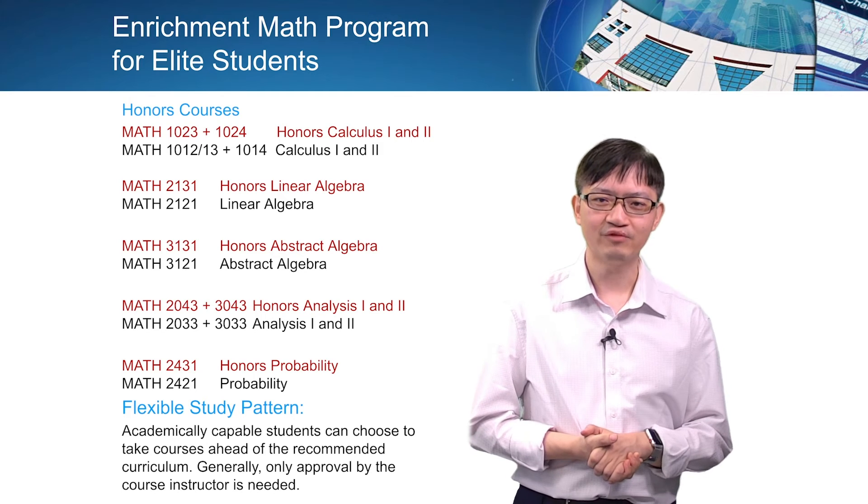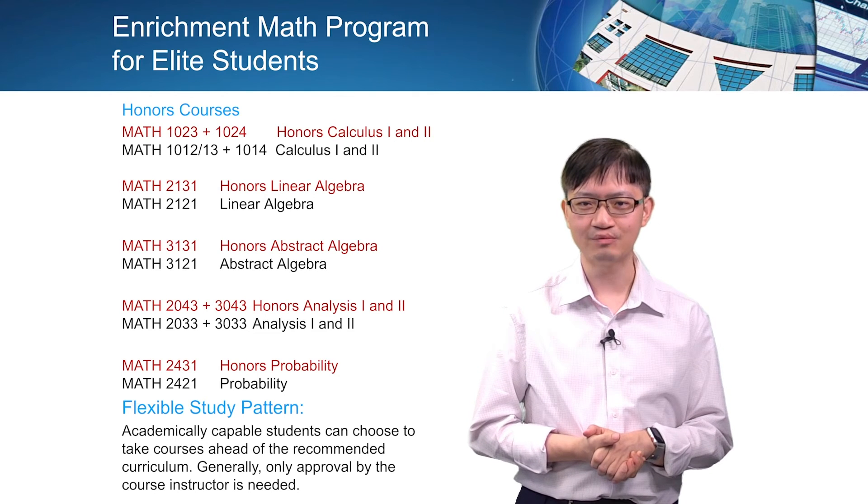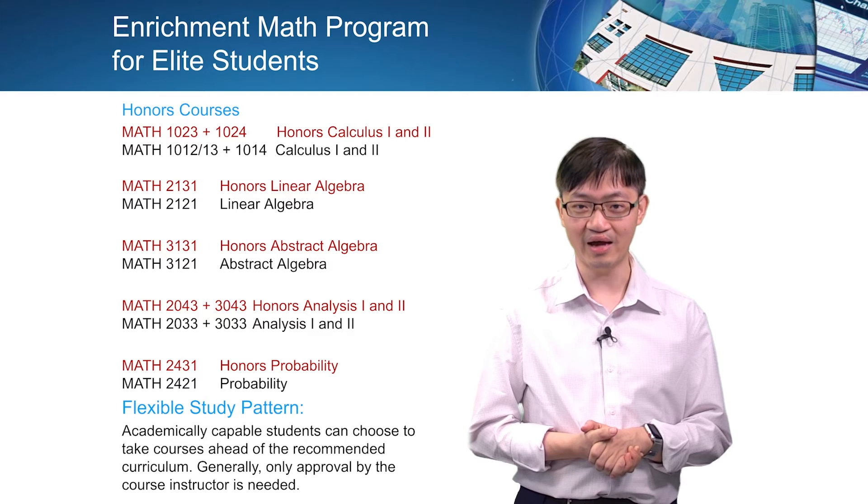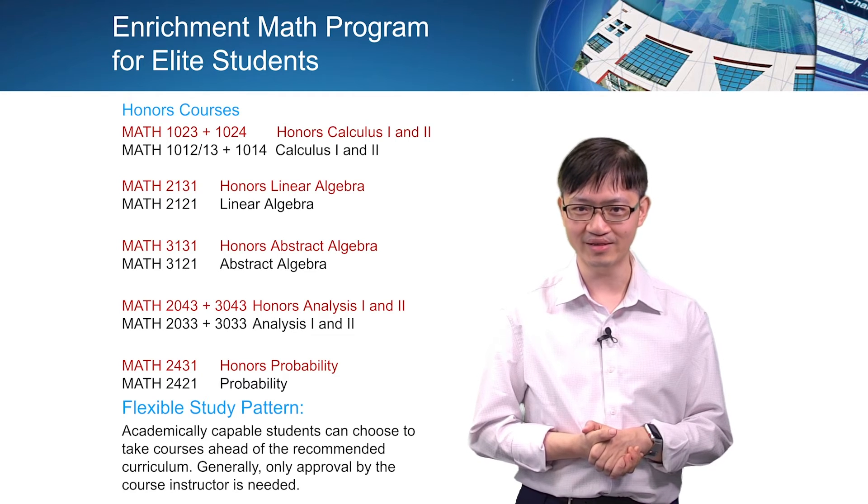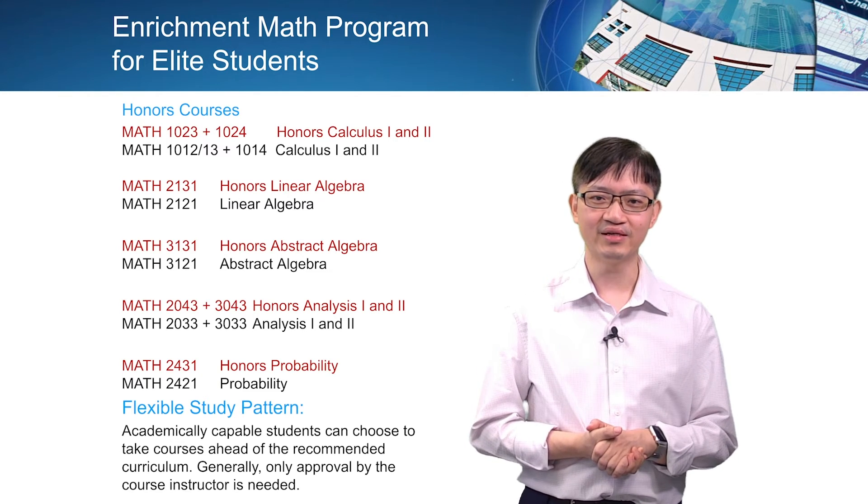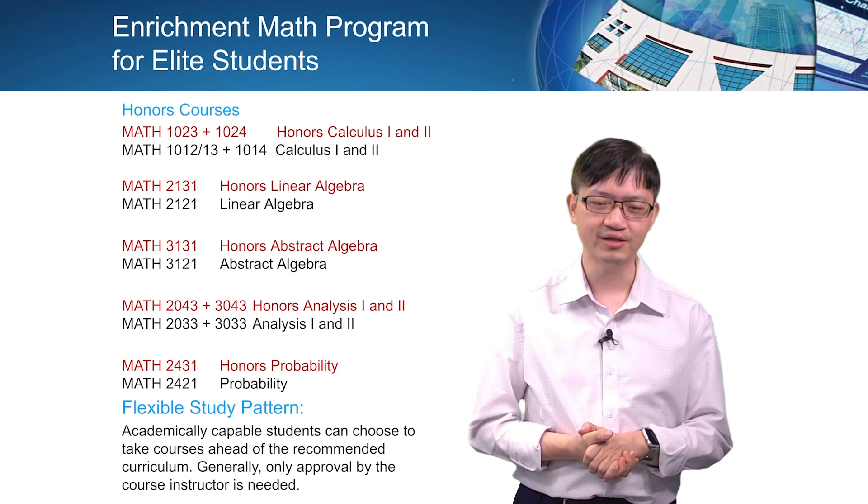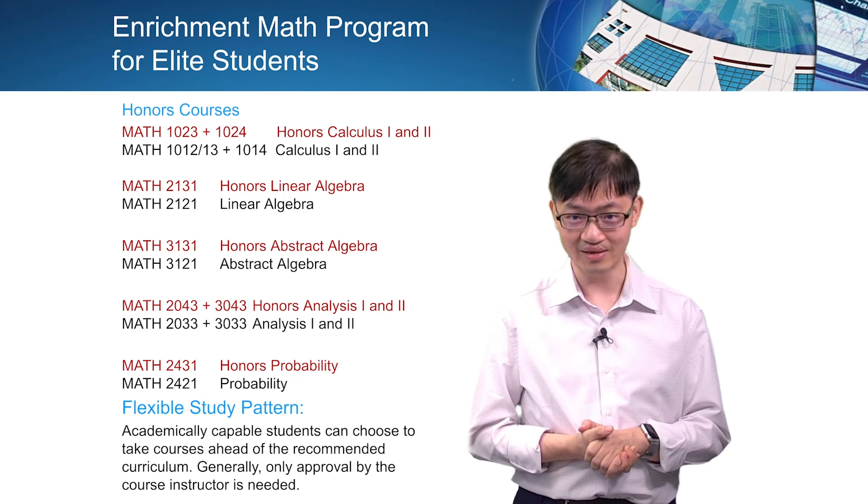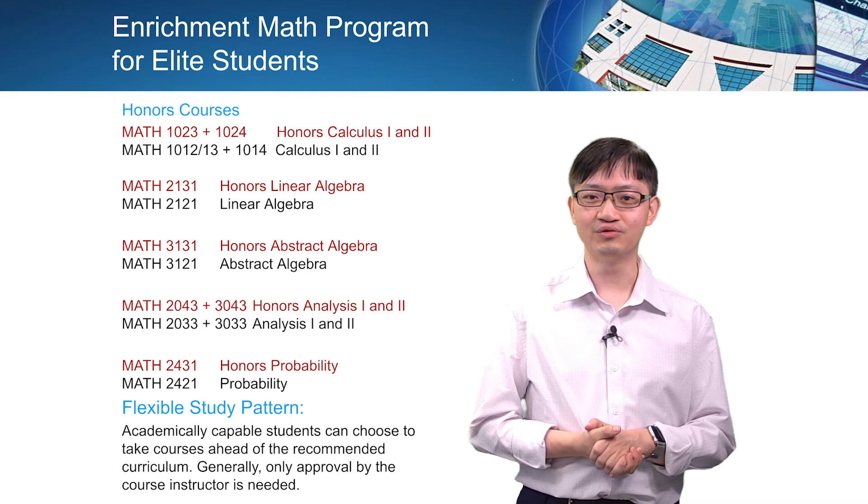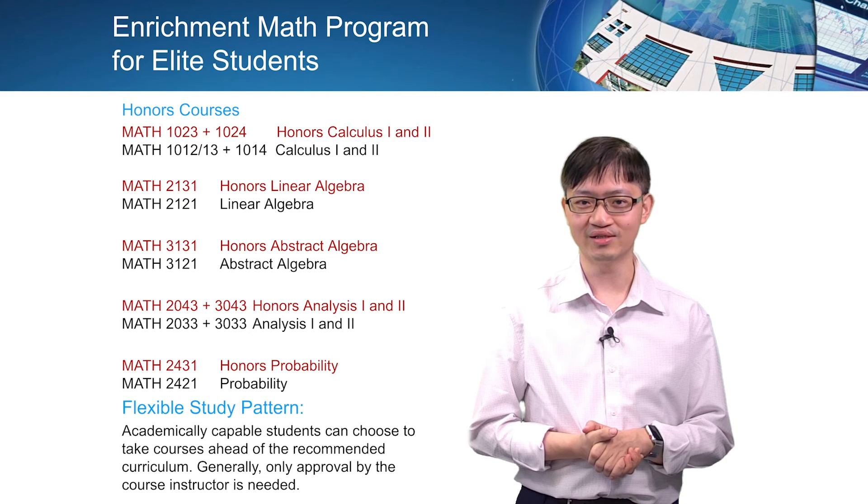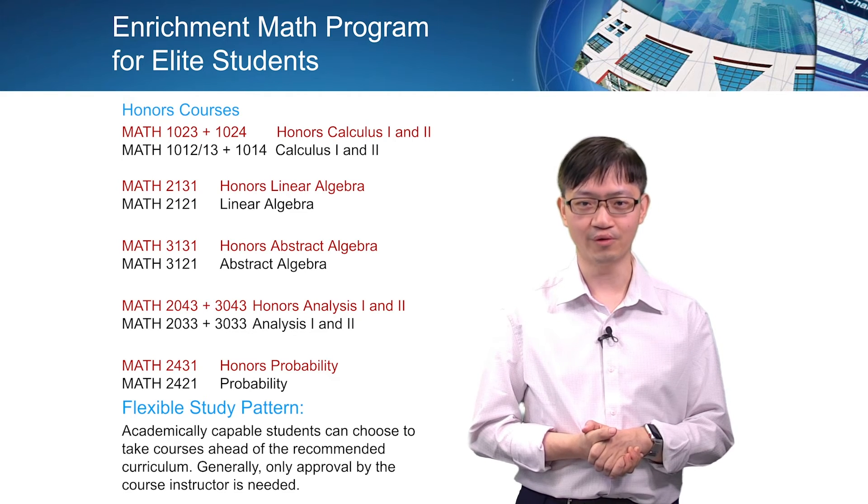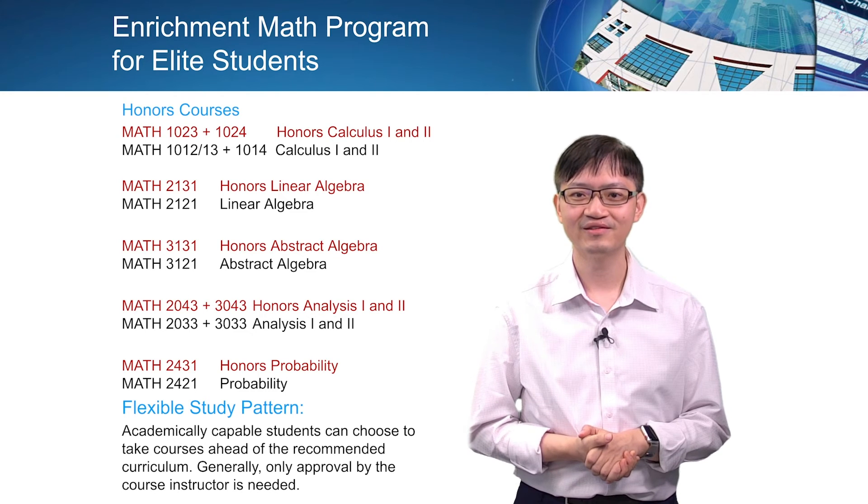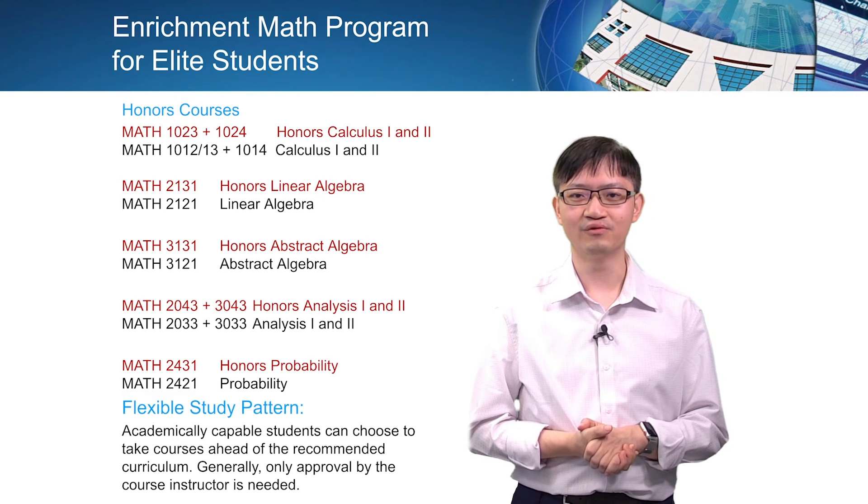Apart from honor courses, the math department also has some flexible policies that actually can allow students to take courses ahead of the recommended study pattern. So what I mean here is if you are just a year one student and you think that you are able to take some year two courses, for example analysis, the only thing you have to do is to ask the instructor who teaches analysis and get approval from him or her. If the instructor thinks that you are ready, then you can take it. That is the only approval you have to seek.